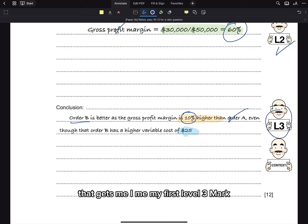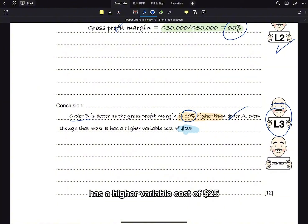That gets me my first level 3 mark, and even though that order B has a higher variable cost of $25, which is the context.